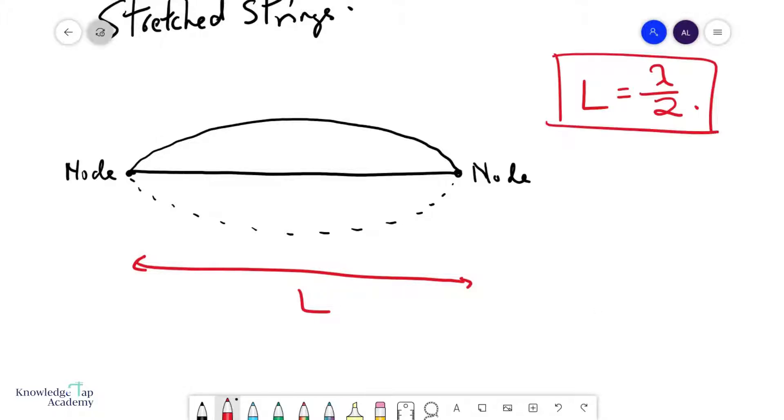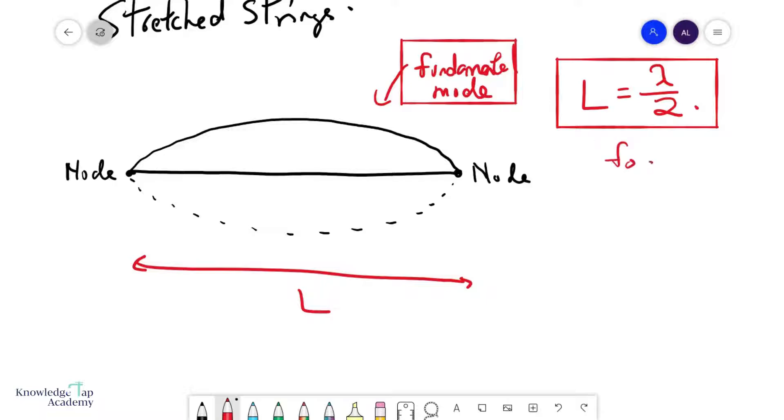And so this is one way. For example, if you had a string of length L and you had a wave of wavelength lambda and it satisfies this equation, then you will get this pattern of a stationary wave. This is also the largest wavelength where you can achieve a stationary wave, and so we call this the fundamental mode of vibration. And also the frequency of the wave that corresponds to this wavelength is called the fundamental frequency, F0.